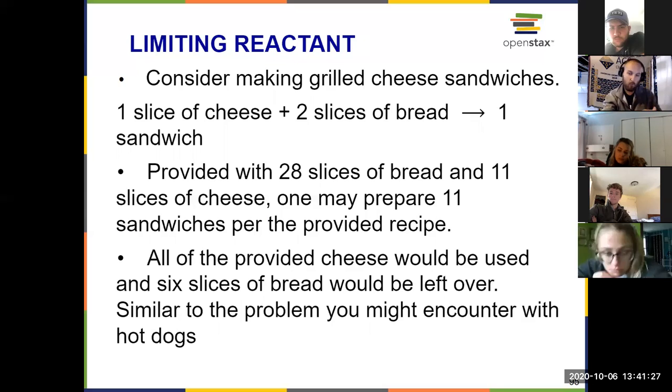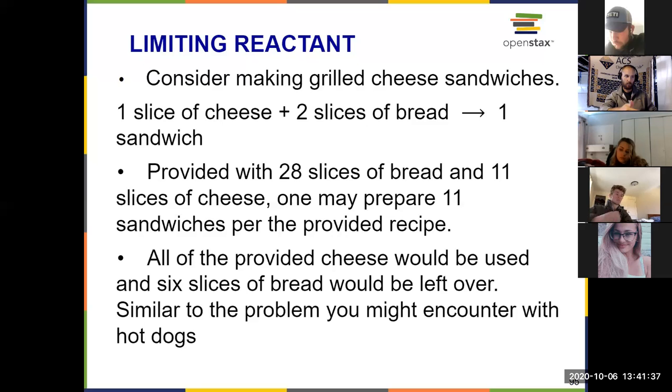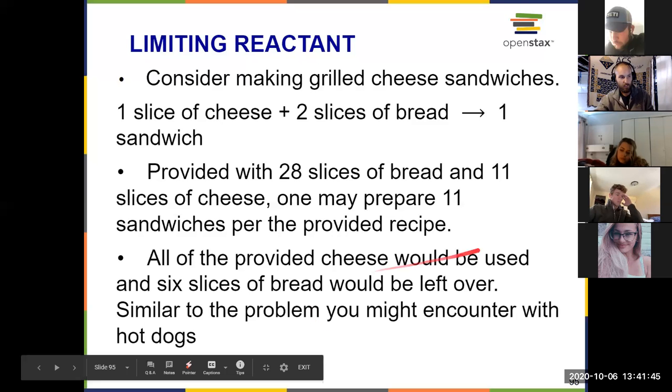Because even though we have 28 slices of bread and in theory we could make 14 sandwiches with that, we don't have enough cheese. So that's what's limiting us. We are going to have a limiting reactant in cheese, and then bread is leftover. That's called the excess reactant. We'll get to that on the next slide.